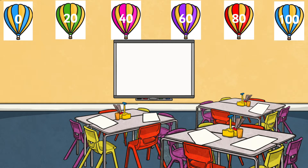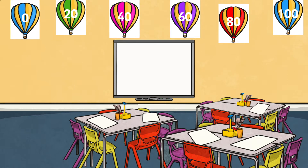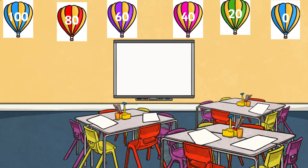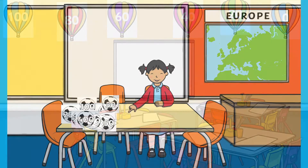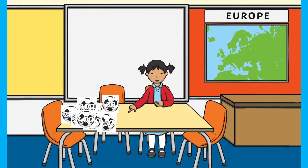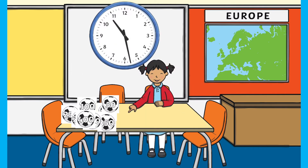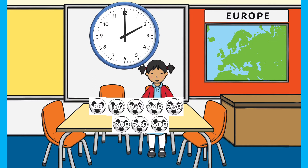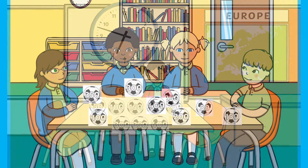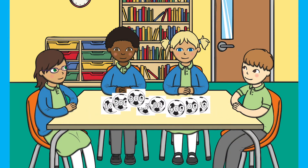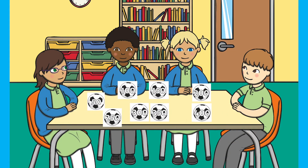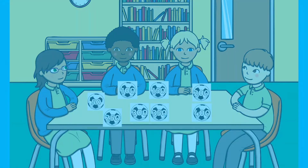You could display these on the wall in order, then later put them in reverse order, as children need to be able to count in these intervals forwards and backwards. Another way to use these before displaying them is to print them, mix them up, and see if your child can put them in the correct order. Maybe you could time them and see if they beat their previous time. You could do this in groups or with the whole class.